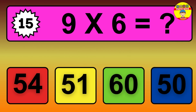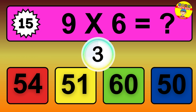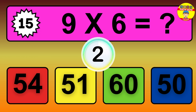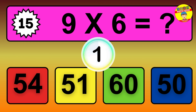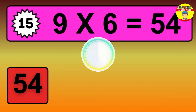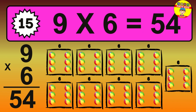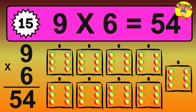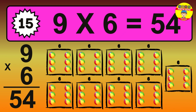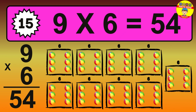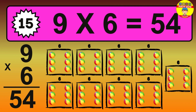Question 15. 9 times 6 equals what? The answer is 9 times 6 is 54. To calculate, we have 9 groups with 6 balls each. So how many balls do we have? 54 balls.